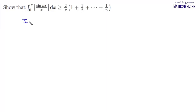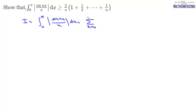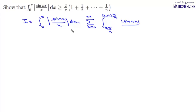We write this integral I as the integral from 0 to π of |sin(nx)/x| dx. We can then write this as the summation where k varies from 0 to n−1 of the integral from kπ/n to (k+1)π/n of |sin(nx)|/x dx, and since x is greater than 0, it is simply x dx.